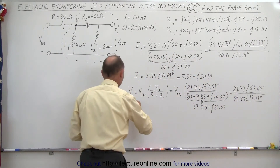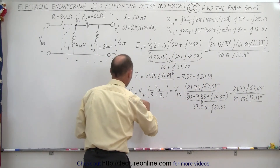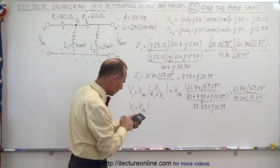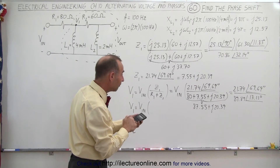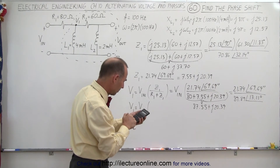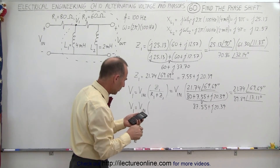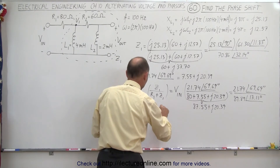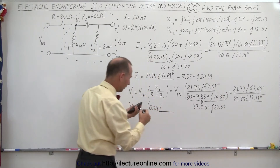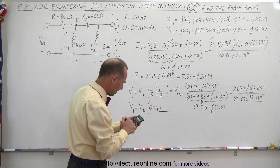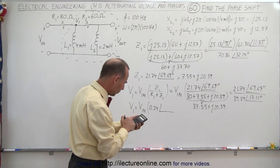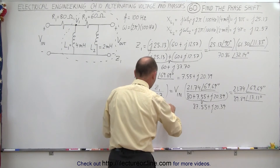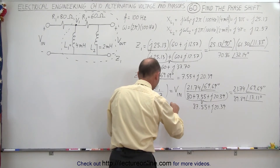Now we can go ahead and say that V1 is equal to V input times the ratio, so we have 21.74 divided by 89.89, which is 0.24 for the magnitude, with a phase angle of 69.69 minus 13.11, which is 56.58 degrees.